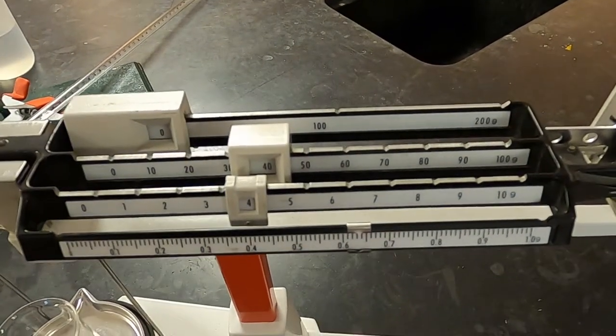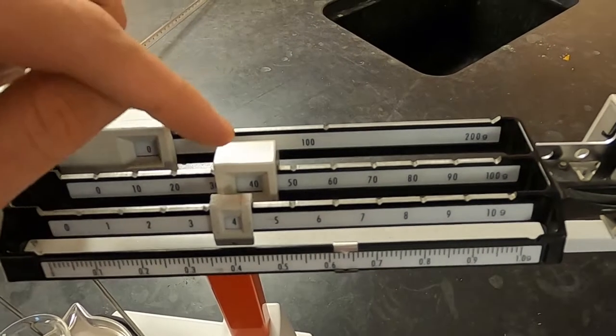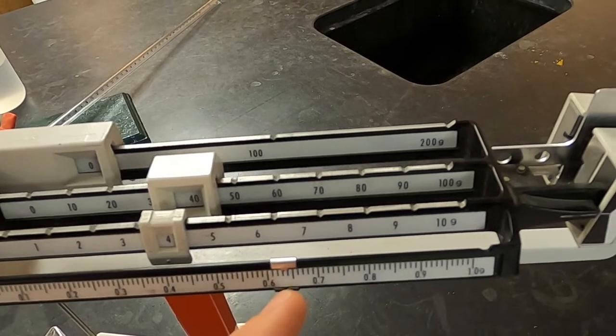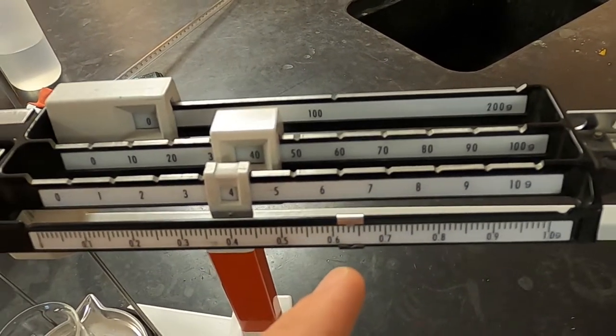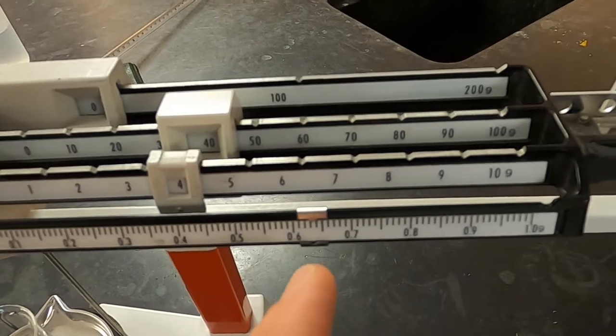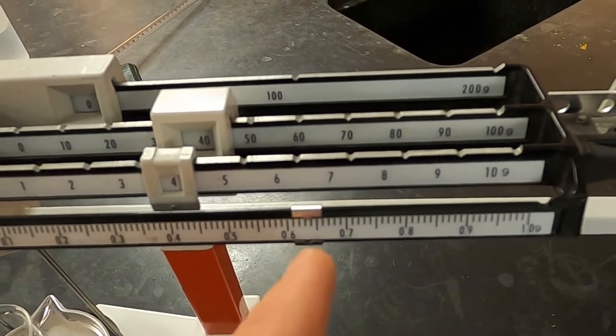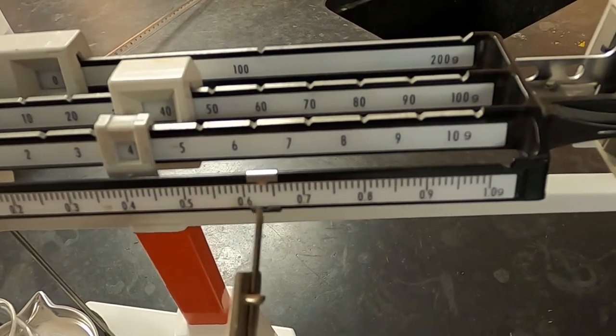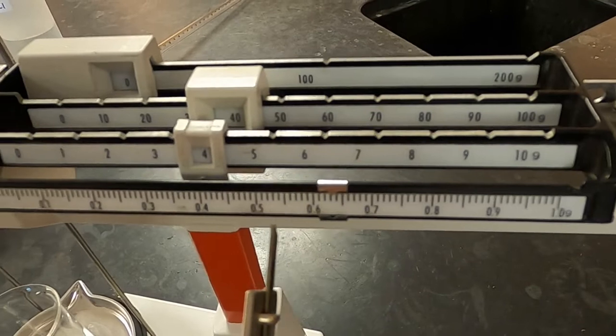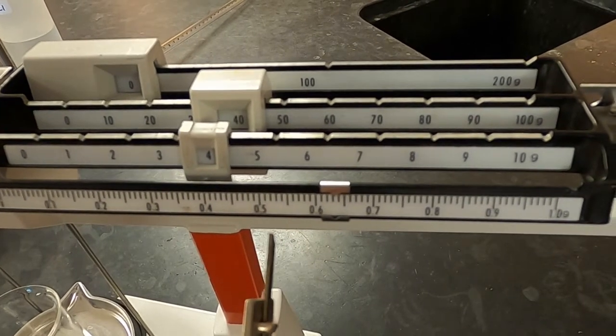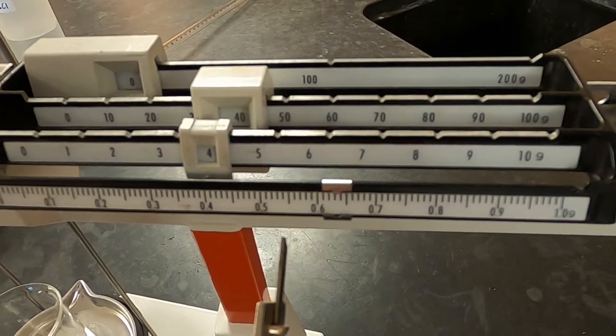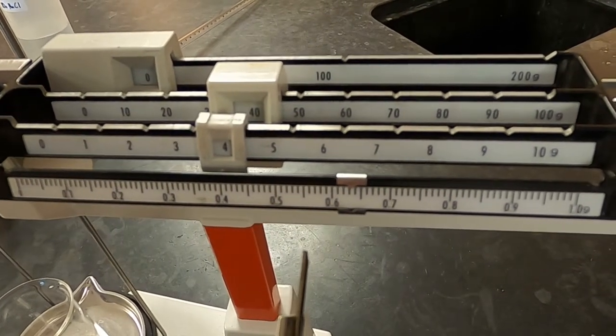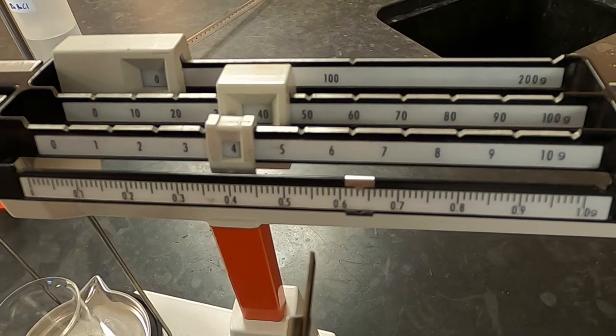Now to read this correctly, the mass of the beaker is 44.6 and then each of these marks is worth 1 hundredth of a gram. So 0.61, 0.62, 0.63. And then we estimate where between the 0.63 and the 0.64 it is. So I'm going to estimate that it's going to be one-tenth of the way along and so the final mass that I would report for this is 44.631 grams.